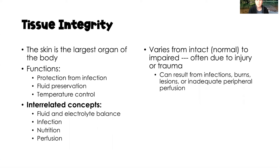There are four interrelated concepts to tissue integrity: fluid and electrolyte balance, infection, nutrition, and perfusion — all of which we have talked about already in our Core Concepts series. If you missed those videos or need to go back and review, they will be linked in the description box below.